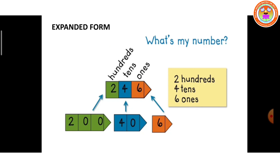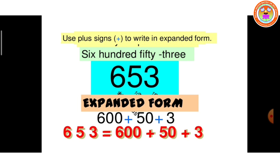What's my number? They are asking. Shall we expand that? 246: 6 in the 1s place, 4 in the 10s place, 2 in the 100s place. Now we want to split: 6 ones is 6, 4 tens is 40, 2 hundreds is 200. So 246, use the plus sign to write in expanded form.